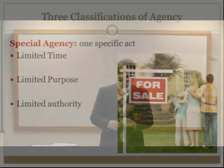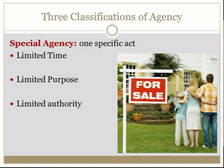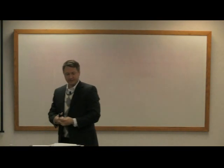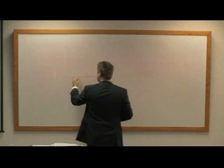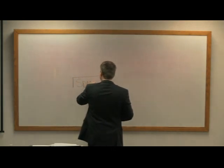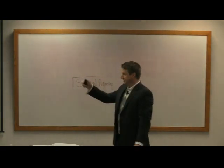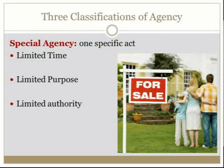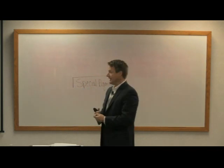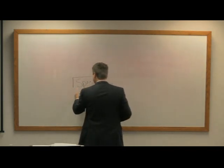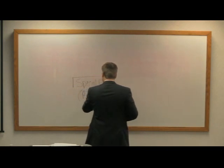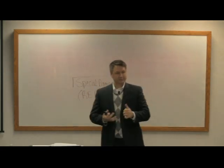Continuing in Chapter 7, they begin to classify the different types of agency relationships. I like to put this in a staircase so you can see it, because we start on the bottom step, which is special agency. As you can see in the handout or book, special agency is for a limited time, limited purpose, and limited authority. This is what we are as real estate agents for the seller or buyer — we are special agents.